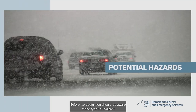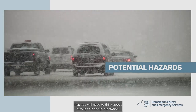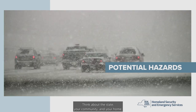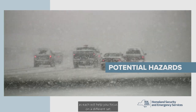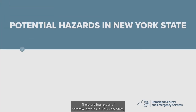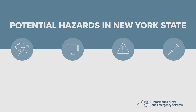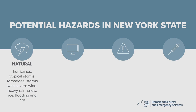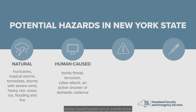Before we begin, you should be aware of the types of hazards you'll need to think about. Think about the state, your community, and your home, as each will help you focus on a different set of potential situations. There are four types of potential hazards in New York State, and although some are mainly seasonal events, most can occur at any time. There are natural hazards such as hurricanes and tropical storms, tornadoes, storms with severe wind and heavy rain, snow and ice, flooding and fire.